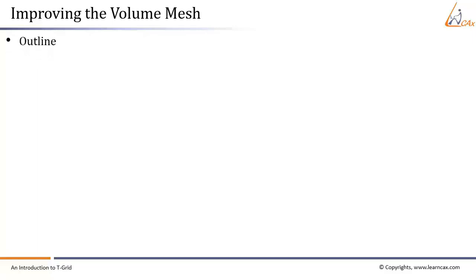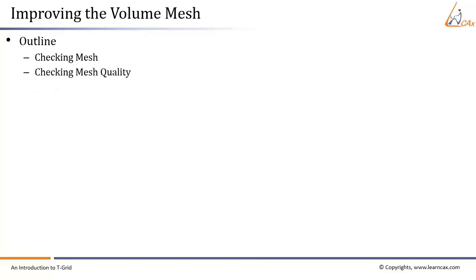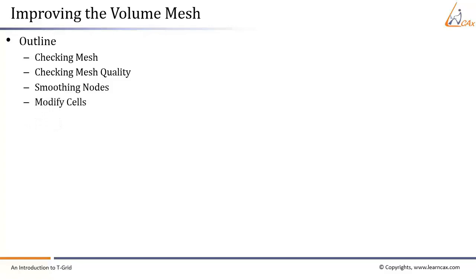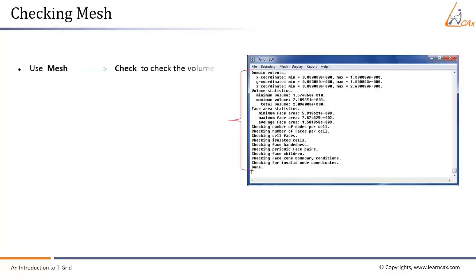The outline of this chapter includes: checking mesh — the mesh checking option enables users to detect any type of mesh defects; checking mesh quality — it reports the size or quality limits of selected cell zones, including minimum, maximum, and average values; smoothing nodes — improves skewness by node repositioning; modify cells — allows operations such as smoothing nodes, moving nodes, and swapping cells; and auto node movement — contains options for moving nodes to improve mesh quality.